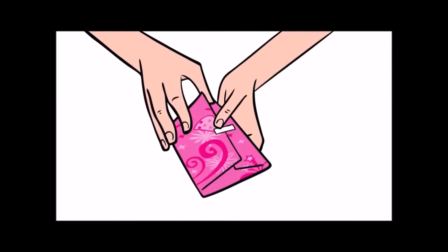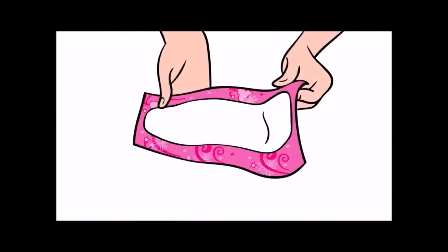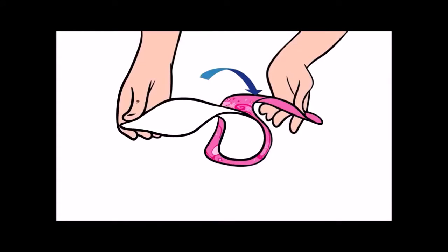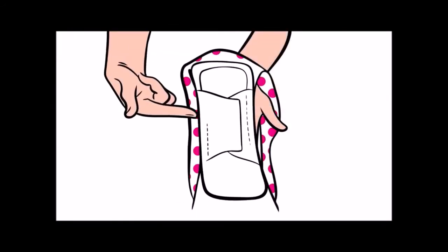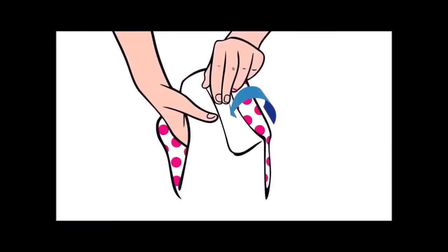So how exactly do I use a pad? It's super easy. You just unwrap the pad, pull off the paper strip that covers the sticky part on the bottom, then you stick the pad on the center part of your underwear. If your pad has wings, then wrap them around the sides.